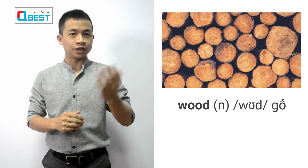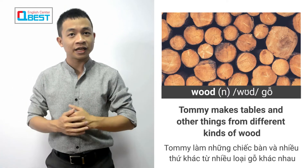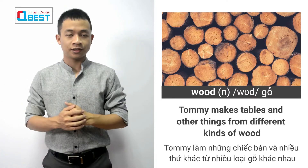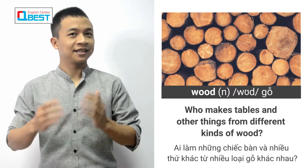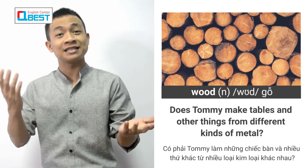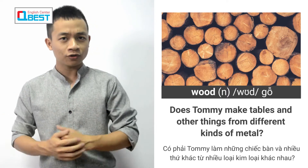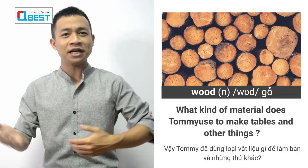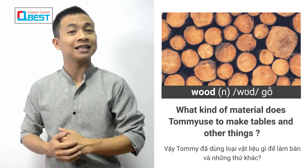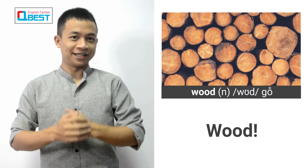Our first one is wood. Tommy makes tables and other things from different kinds of wood. Who makes tables and other things from different kinds of wood? Tommy. Does Tommy make tables and other things from different kinds of metal? No. So what kind of material does Tommy use to make tables and other things? Wood. Beautiful.